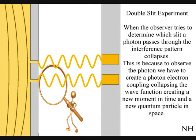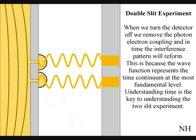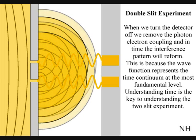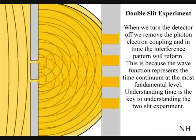This is because to observe the photon, we have to create a photon-electron coupling collapsing each wave front into a new quantum particle that will have its own position in space and time. If we turn the detector off, we remove the photon-electron coupling, and in time the interference pattern will reform. Just like in Newton's first law of motion, the interference pattern will continue to maintain its state unless acted upon by an external force.